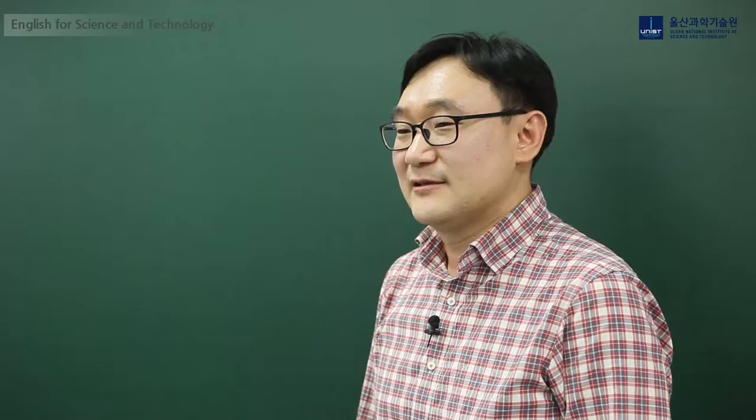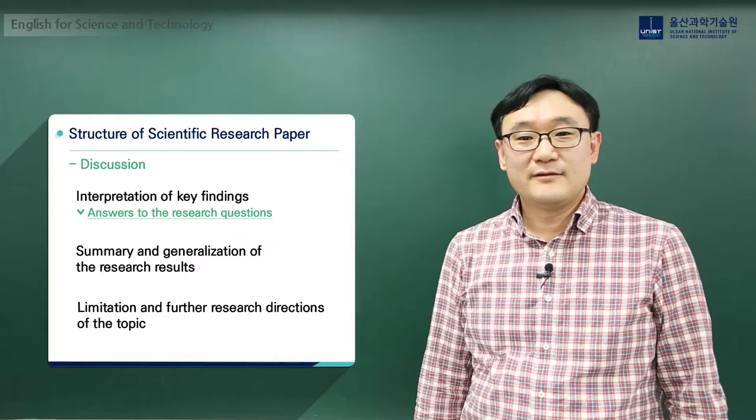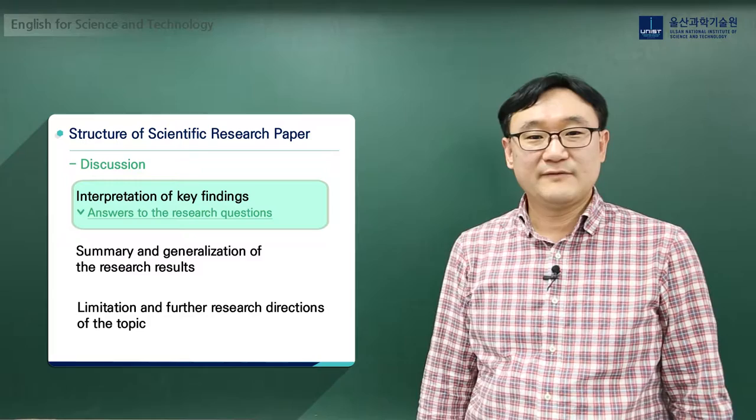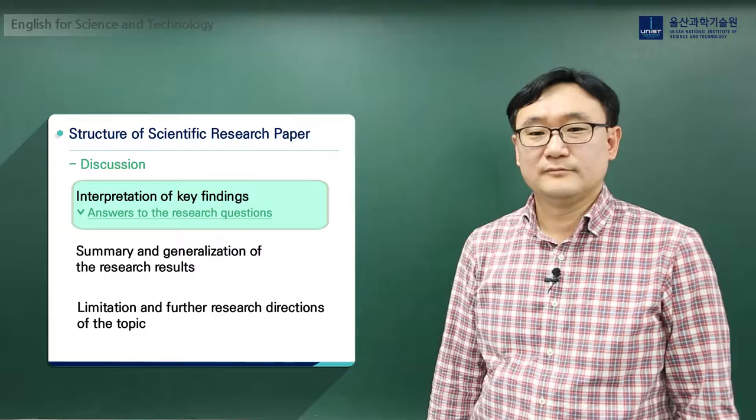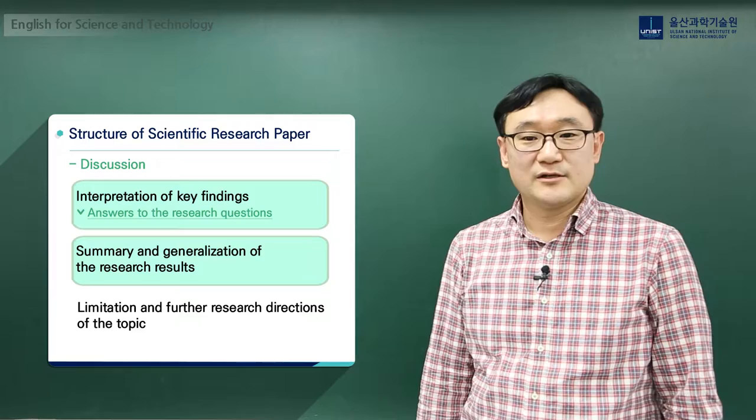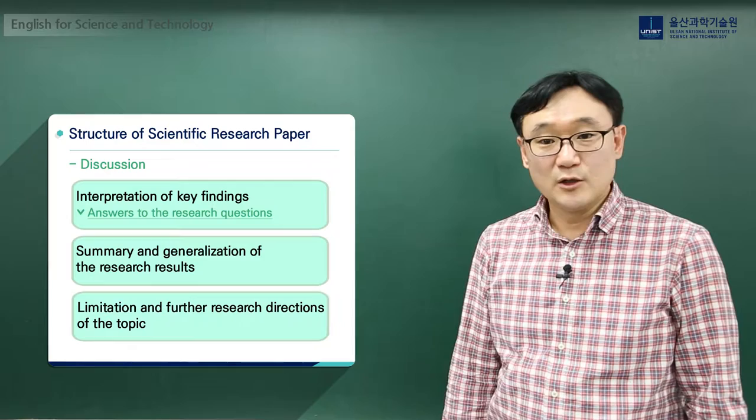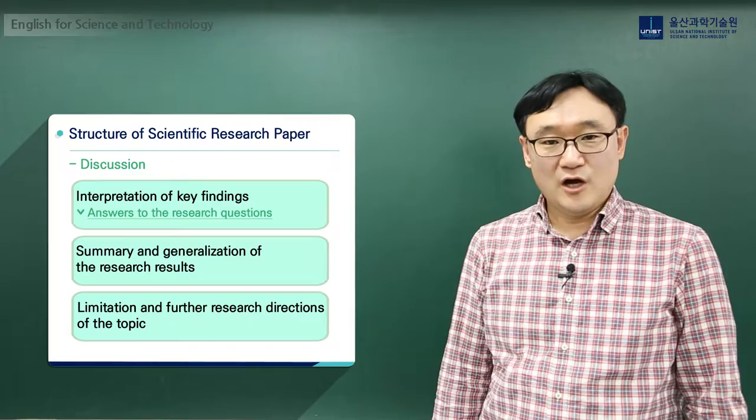In the discussion section, we need to include at least three components. These are the interpretation of key findings—specifically, the answers to your research questions. We need to include the summary and generalization of your research results. And finally, you could include the limitations and further research directions of the topic.